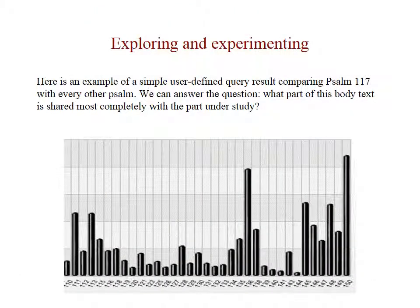Moving on to the second major need — the need to explore and experiment. This exploration, experimentation, and presentation are all overlapping needs, and the translator requires timely feedback in all three areas. The particular chart in view gives an example of a query and the parameters implicit in its definition, all under the user's control — in this case showing the relationship of Psalm 117 to each of the other psalms in the Psalter.